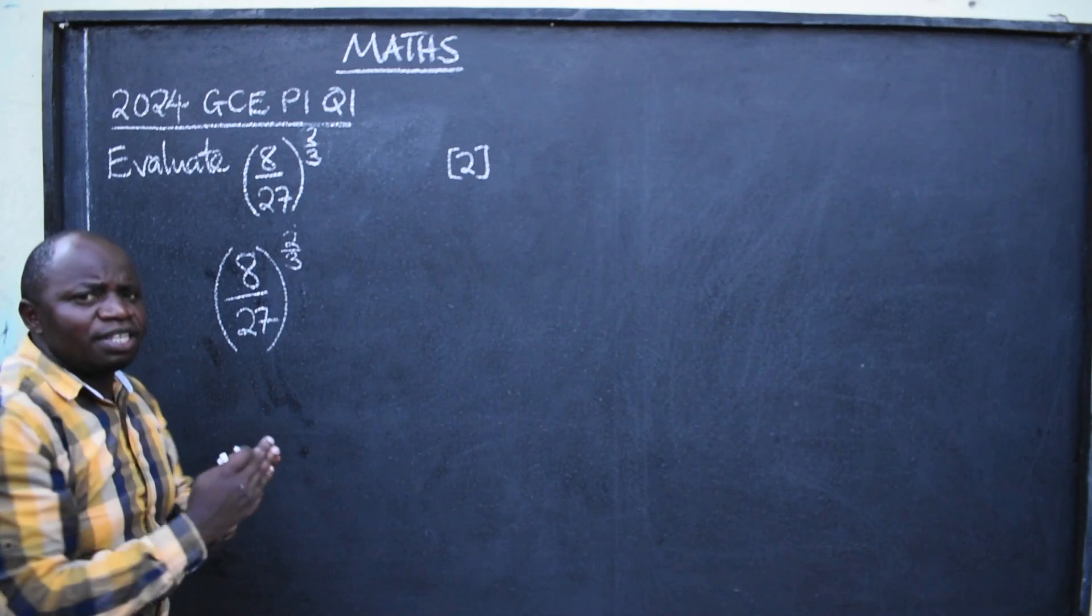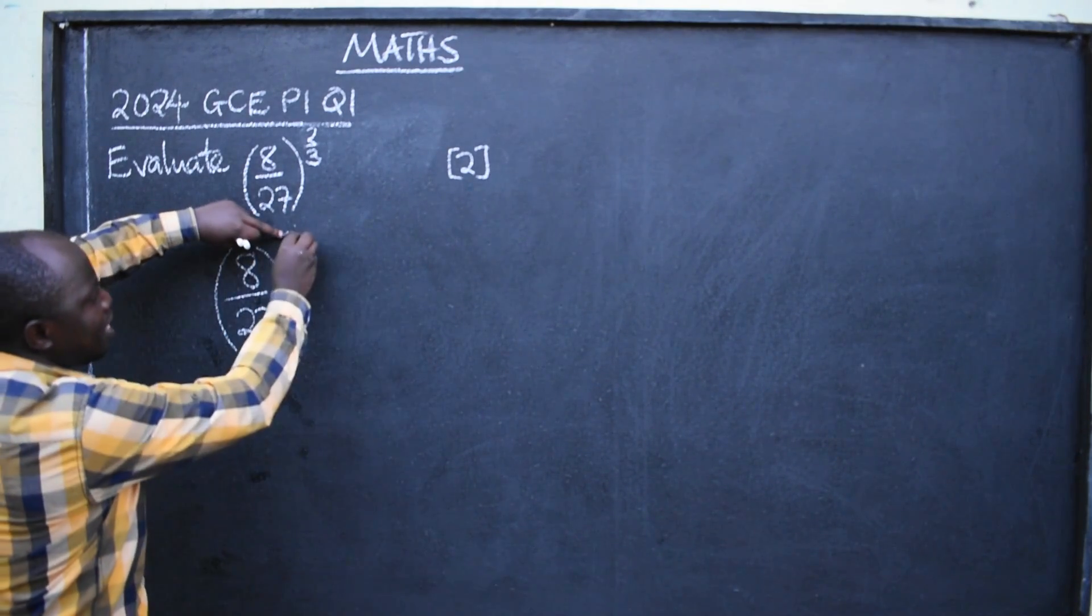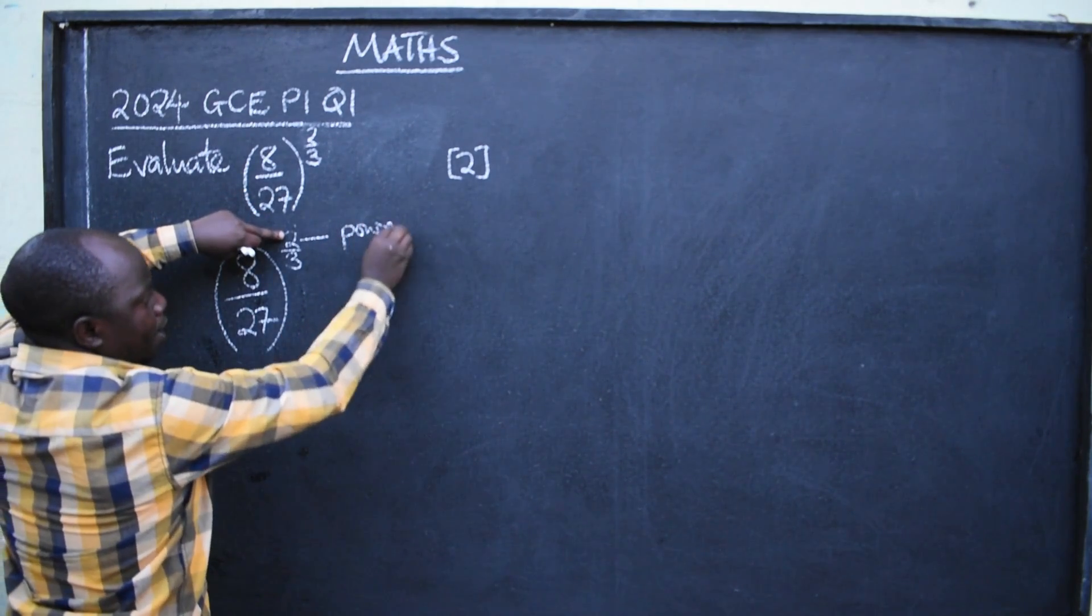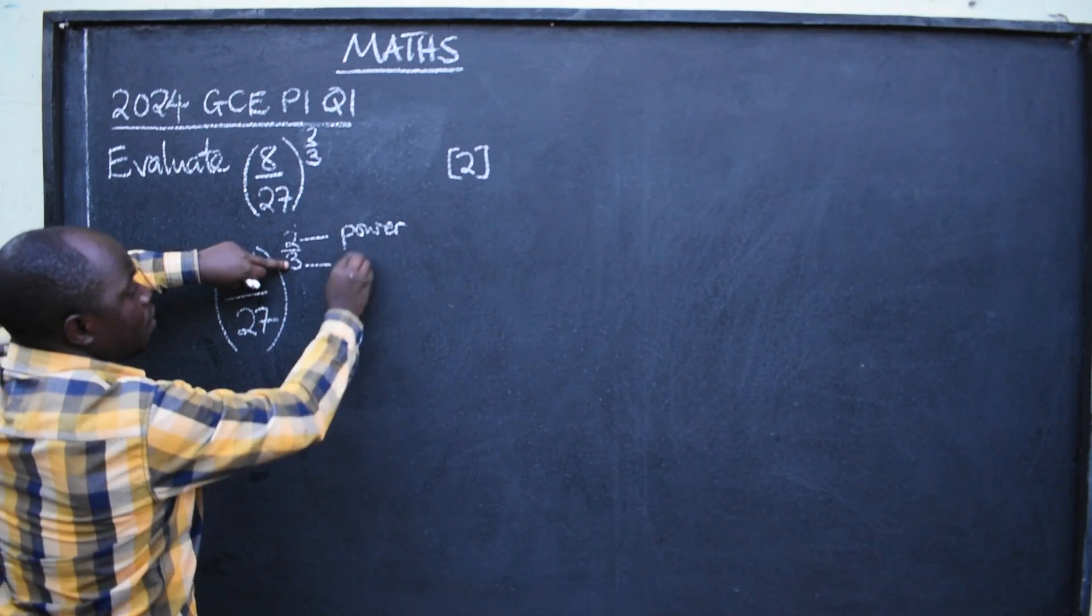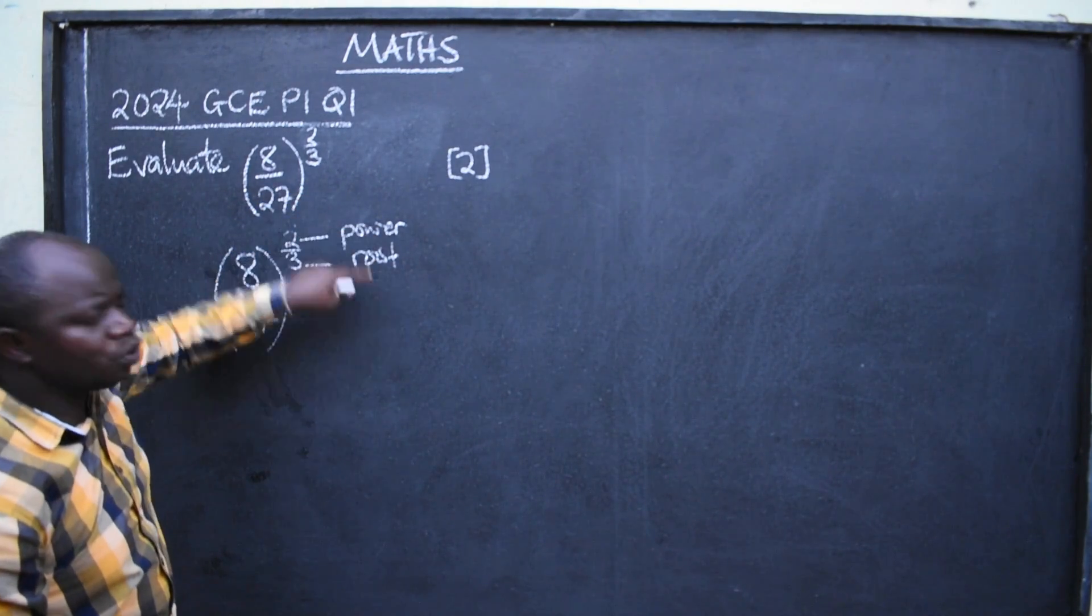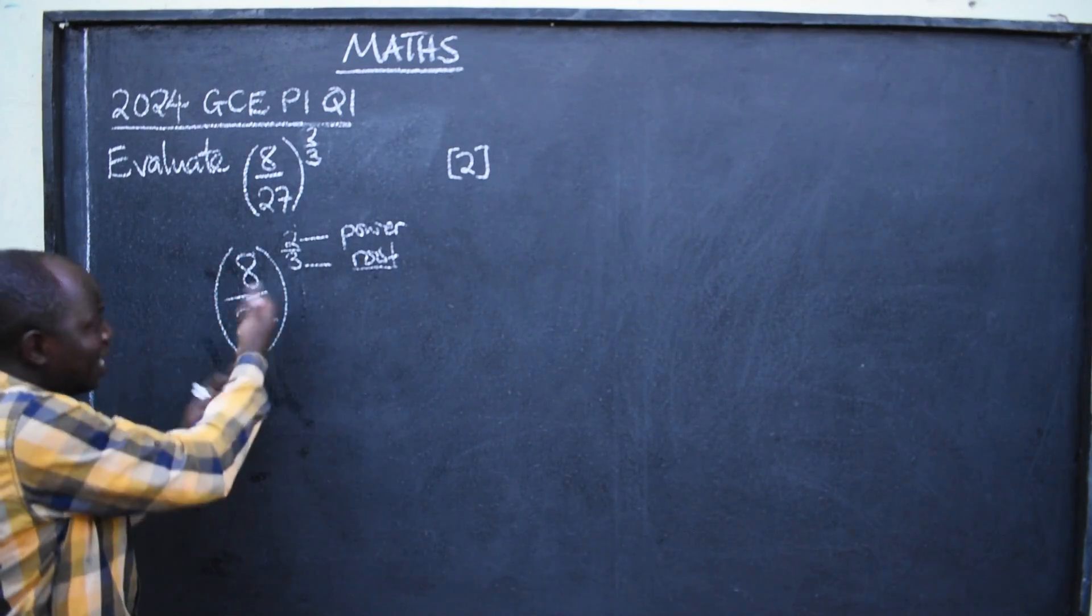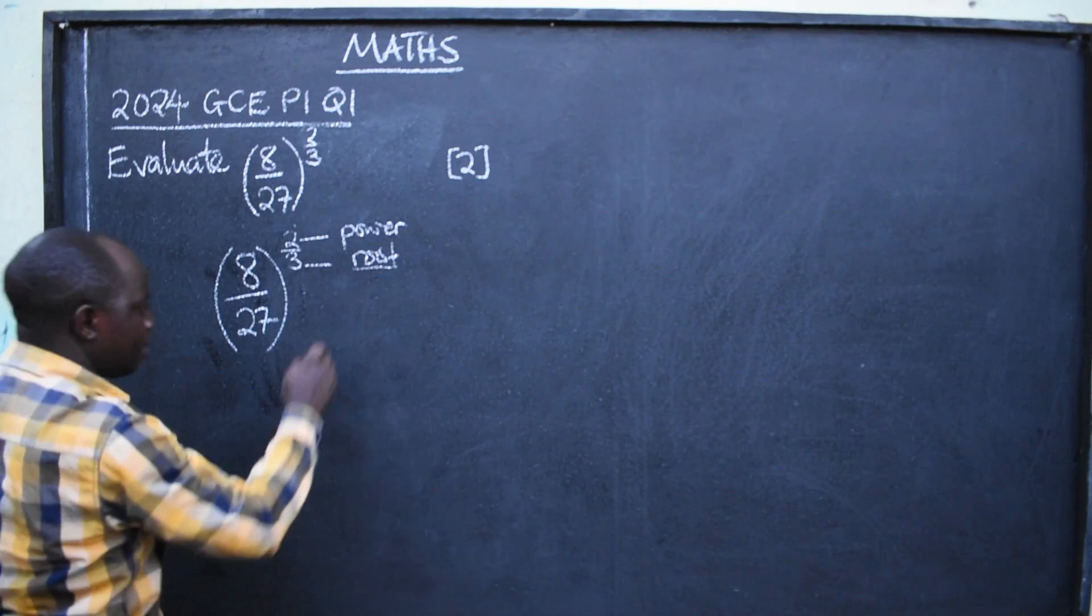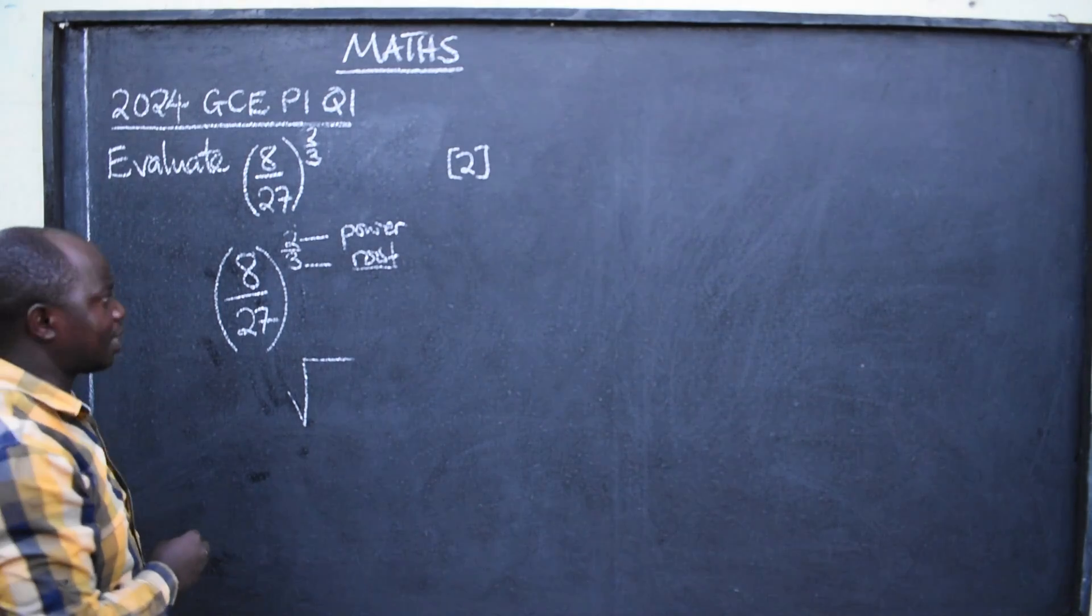Okay? Now, when you are given the whole fraction here, please always know that the numerator, the top number, is called power. Then the denominator, bottom number here, is called the root. The moment you are given the root, there is what? Root.